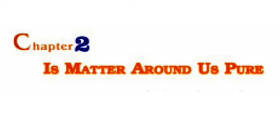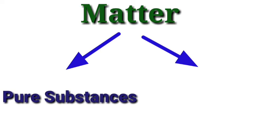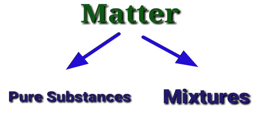The chapter is 'Is Matter Around Us Pure?' We are going to discuss this chapter. We divide matter into two parts: first is Pure Substance, and the other is Mixtures.